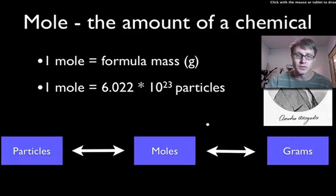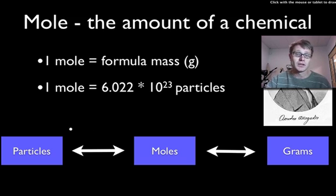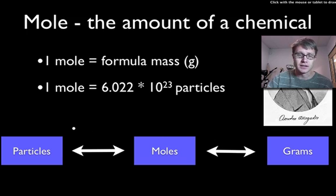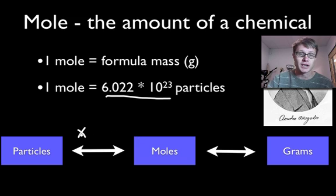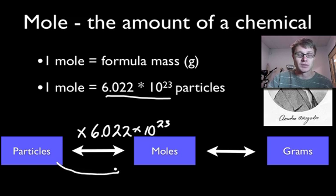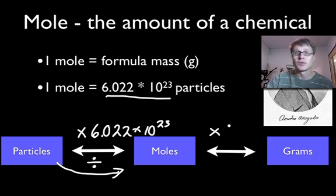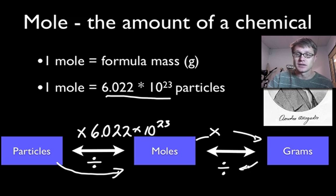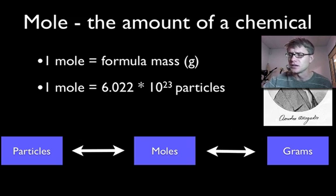Just like we could go from eggs to dozens to ounces, we can go from particles — either atoms or molecules — to moles, and then to grams. One mole is exactly 6.022 times 10 to the 23rd particles. To go from moles to particles, multiply by 6.022 times 10 to the 23rd; to go back, divide. To go from moles to grams, multiply by the formula mass; to go back, divide. I always want you to understand how to do this using the factor label method — if you don't know that, look at the video on factor label.